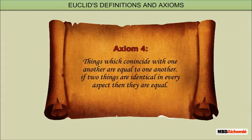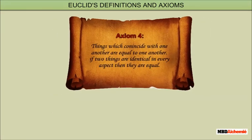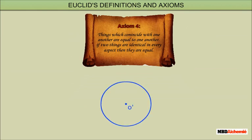Axiom 4: Things which coincide with one another are equal to one another, that is, if two things are identical in every aspect, then they are equal. Example: if two circles with center O and O' are such that one superimposes the other, then the areas of two circles are equal.